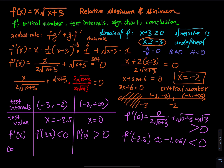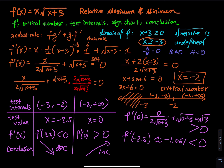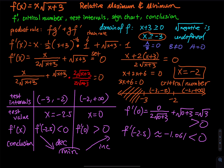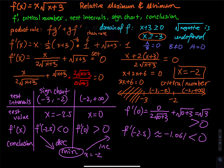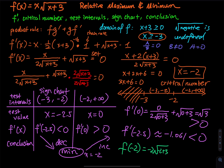Negative means f prime is negative, so the slope is negative — the function is decreasing. Positive means the slope is positive — the function is increasing. When the function goes down, then has a horizontal tangent, then goes up, you get a local or relative minimum at x equals negative 2. So there is a minimum at x equals negative 2. Plugging back into the original function: f of negative 2 equals negative 2 times the square root of negative 2 plus 3, which equals negative 2. So the point negative 2 comma negative 2 is the relative minimum.